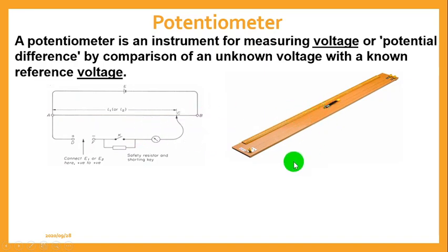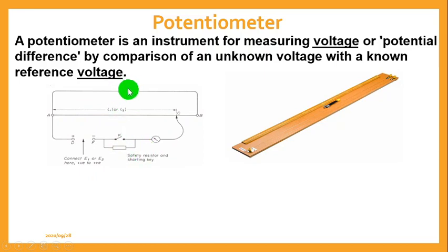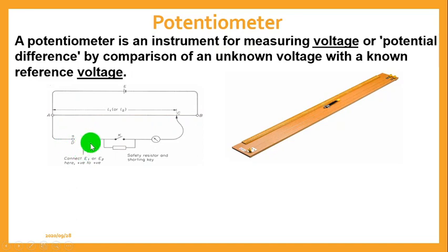The first image is the real apparatus used in the laboratory for Potentiometer, while the second represents the circuit diagram. Looking at this diagram, we have a galvanometer at one place, an electromotive force of a battery or cell of a known value, and here is where we insert the cell whose potential difference or voltage we want to determine.